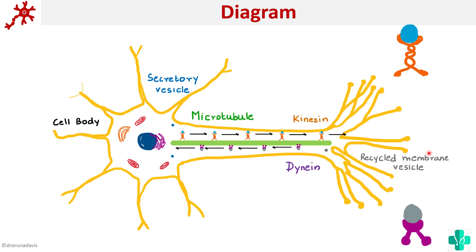This is how axoplasmic transport occurs. The movement from the soma to the axon is called anterograde transport, and the reverse — which moves from the axon to the soma — is called retrograde transport. So axoplasmic transport can be of two types: anterograde transport and retrograde transport.